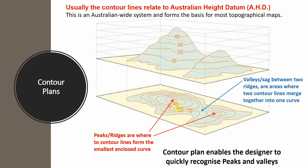On a contour plan, peaks are identified by the smaller enclosed circles — these represent the highest ridges. Valleys are where contour lines change sudden direction: a contour line that should theoretically close around one peak instead merges with another line or changes direction to wrap around a second peak. That sudden change in direction indicates the valley area between the peaks.